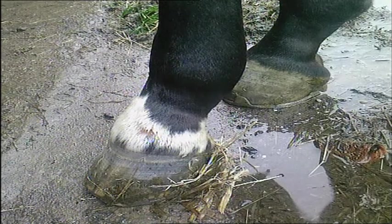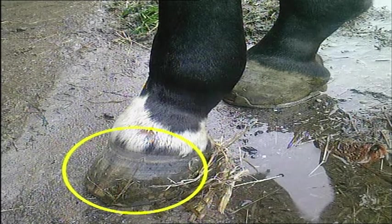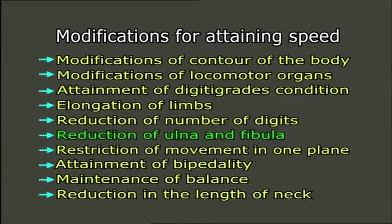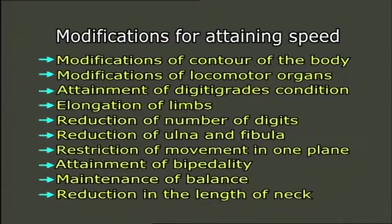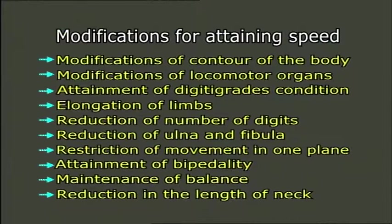Reduction of number of digits: with the attainment of the digitigrade condition, there is always a reduction in the number of digits. In horses, the limbs have only one digit. Reduction of ulna and fibula: in horses the fibula is reduced to a small vestige. Restriction of movement in one plane: the articulation of bones prevents universal movement but permits movement in one plane only, which in turn helps in increasing locomotory power.